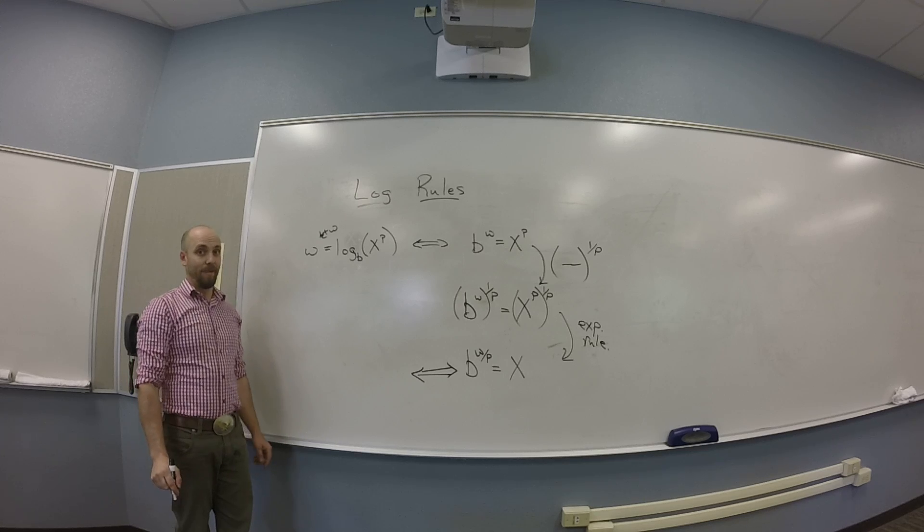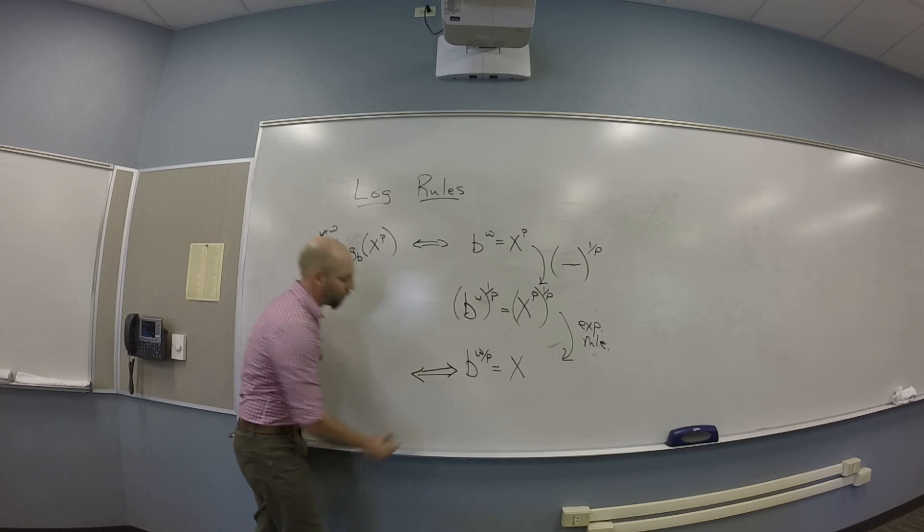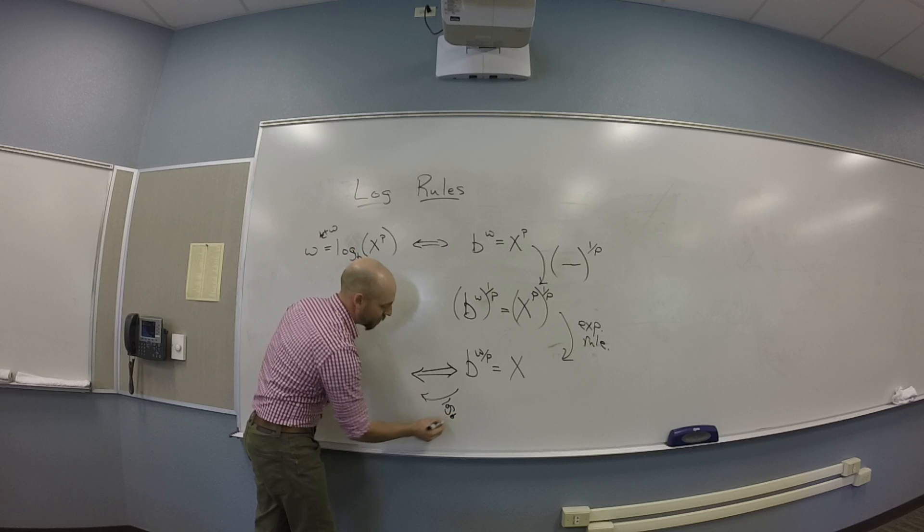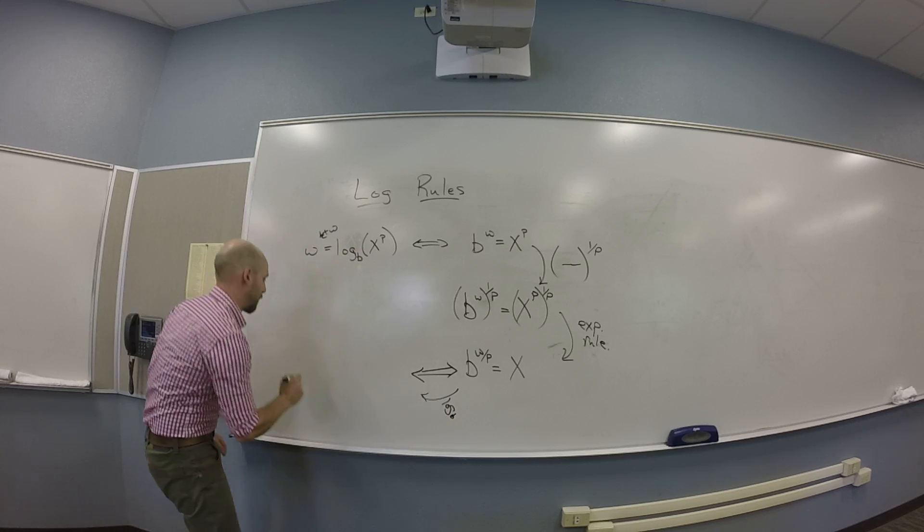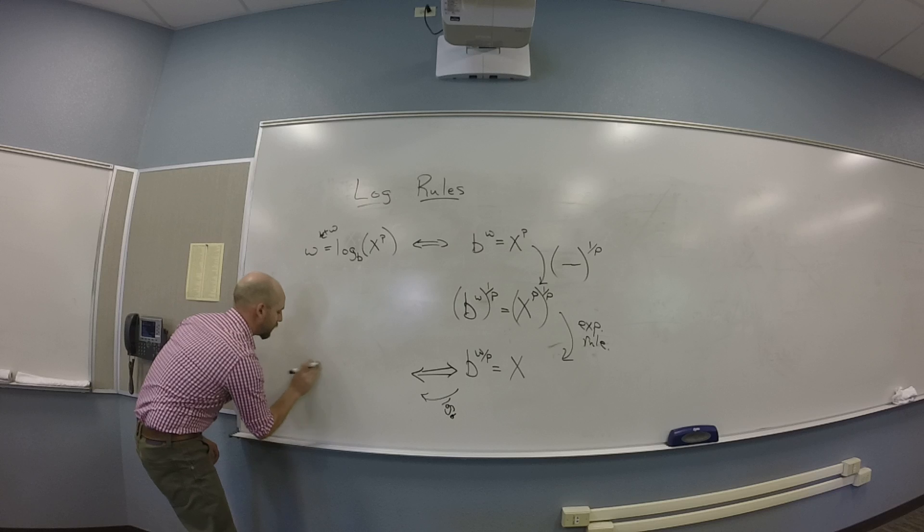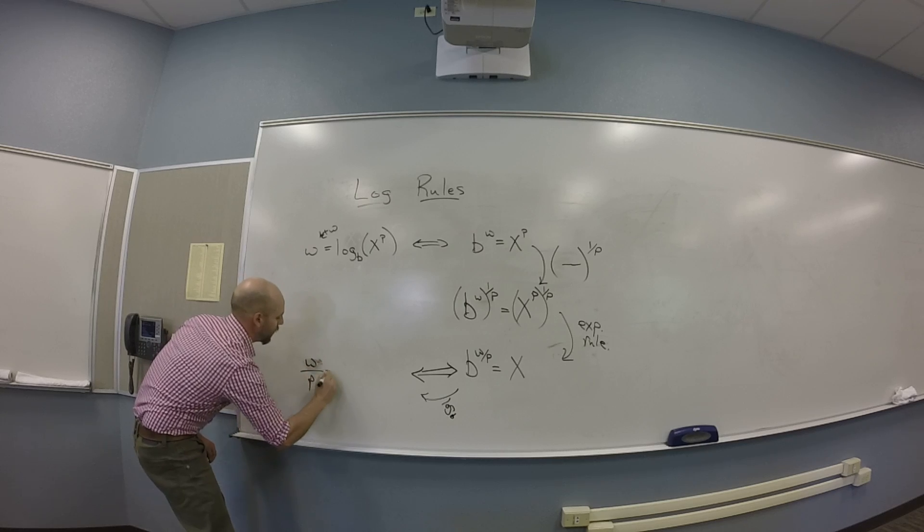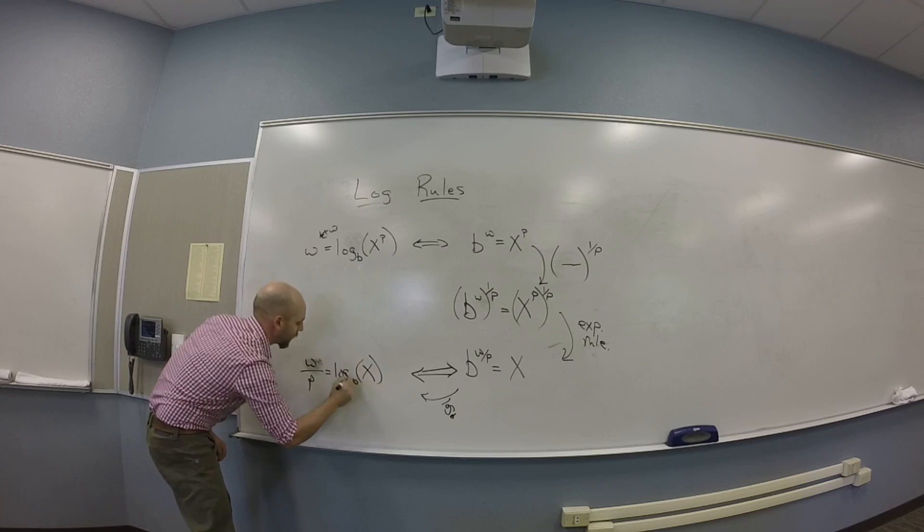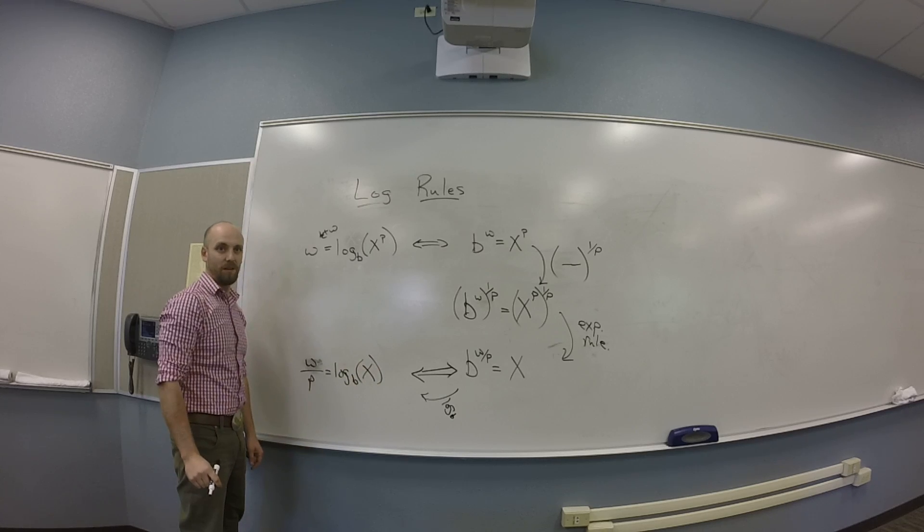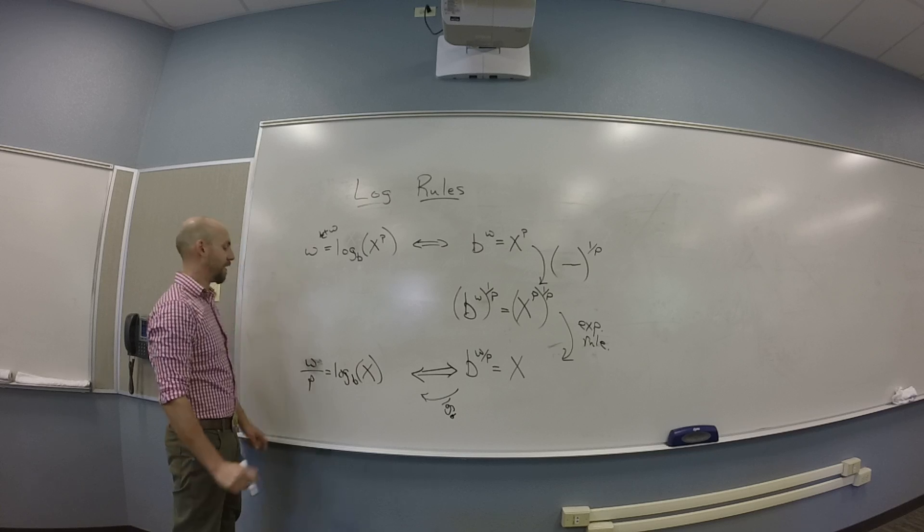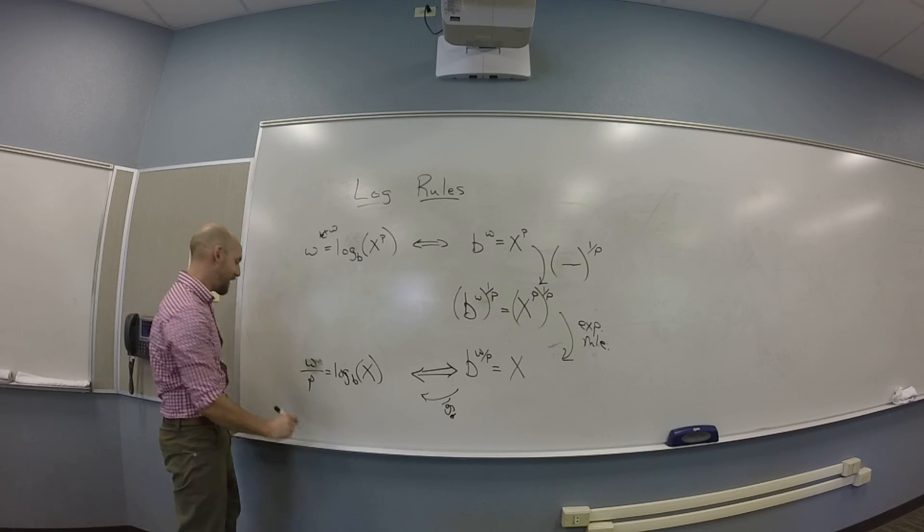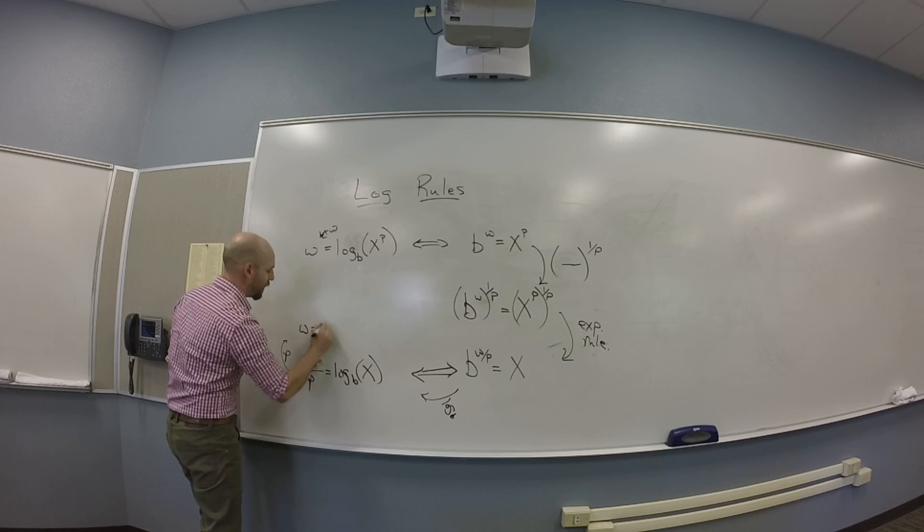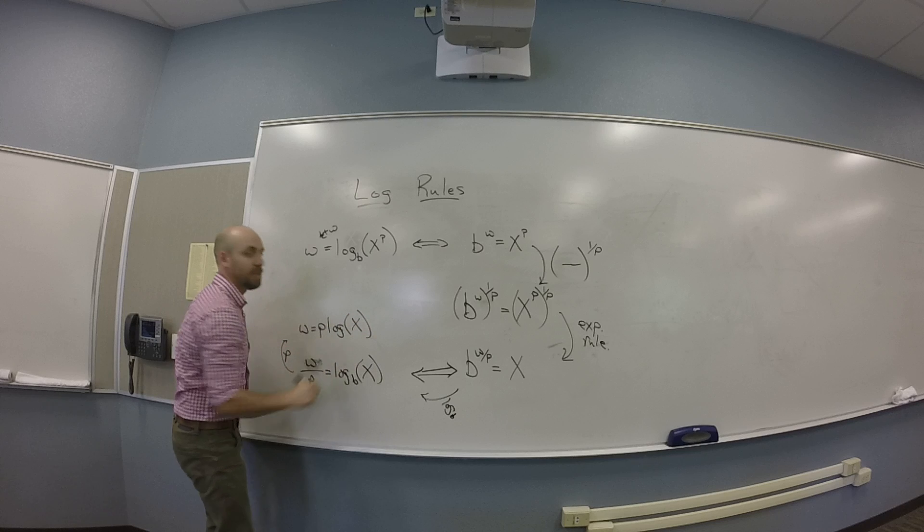That thing, equal to x. So really what I want to do here, what I'm doing is I'm taking a log base b of both sides. So I got w over p is log base b of x. And then I multiply both sides by p. And I get w is p log of x.